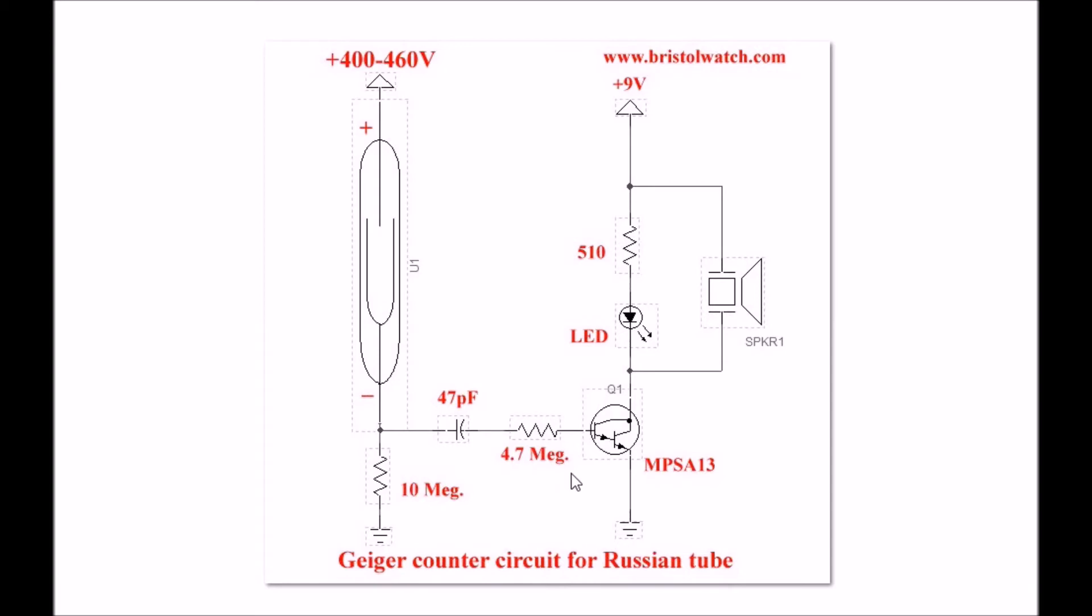Here is the actual circuitry itself. The voltage goes... Here's your Geiger tube, a 10 meg resistor to ground, a 47 picofarad capacitor.